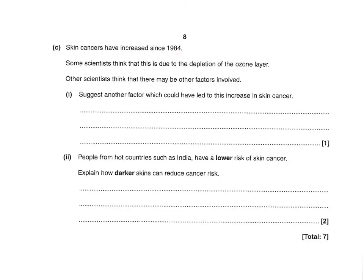Skin cancers have increased since 1984. Some scientists think this is due to depletion of the ozone layer; other scientists think there may be other factors. Suggest another factor which could lead to the increase in skin cancer. You could say there's more sunbed use, people spend more time in the sun, people aren't using enough sunblock, or more people are visiting hot countries. People from hot countries like India have a lower risk of skin cancer. Explain how darker skin can reduce cancer risk. First, identify that UV radiation causes skin cancer — that's one mark. Second, say that UV radiation is absorbed for the second mark. And less radiation reaches the underlying skin for a further mark. Anything about melanin doesn't get you a mark; it's more about the fact that UV radiation is absorbed by the upper layers of skin and therefore can't penetrate further down.